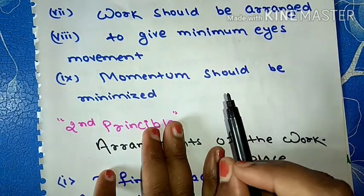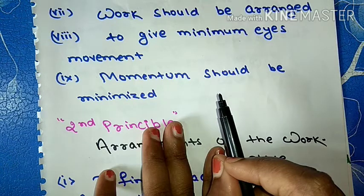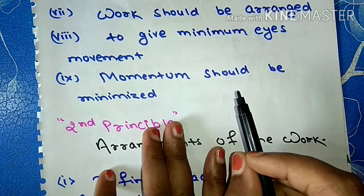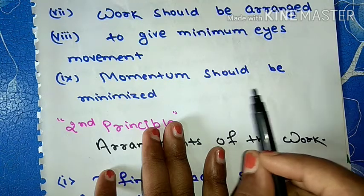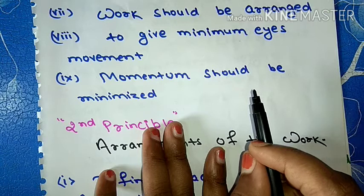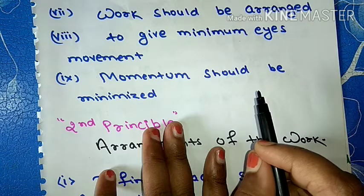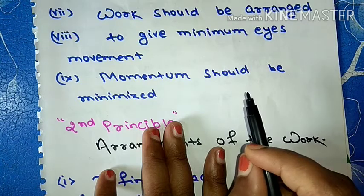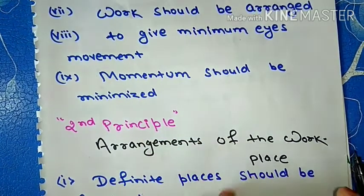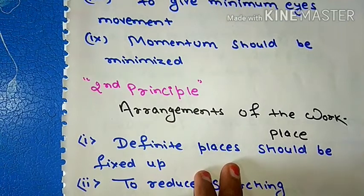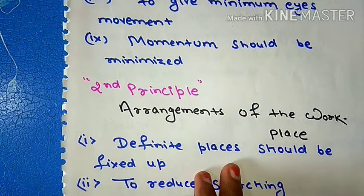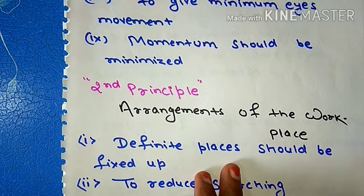Momentum should be minimized. Momentum should be used for helping the operator, but the momentum should be minimized if it is to be overcome by muscular effort of the operator. That means, momentum should be there to help the operator, but it should be minimum. Now, second principle of motion economy is arrangement of the workplace.